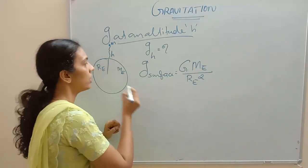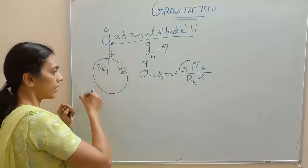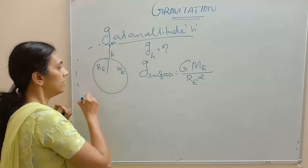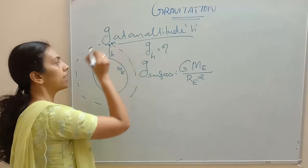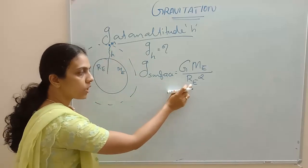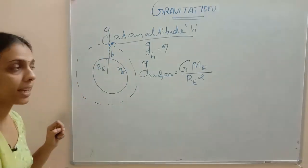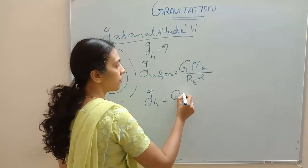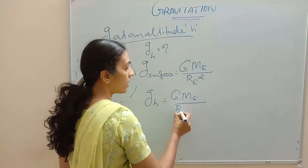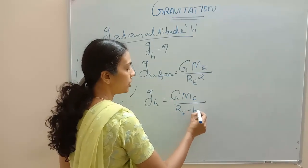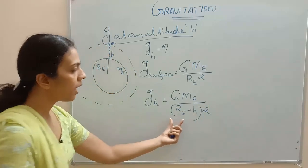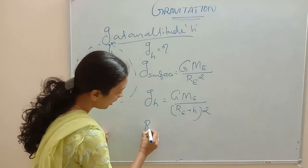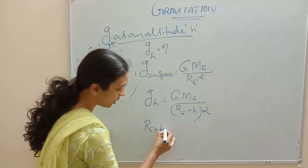For height H, if I consider a sphere up to that point, what will be the radius? It will be R_E plus H. So instead of R_E, I substitute R_E plus H. Therefore, g at height H equals G M_E divided by the quantity R_E plus H, whole squared. Now I am considering this R_E plus H the whole squared.